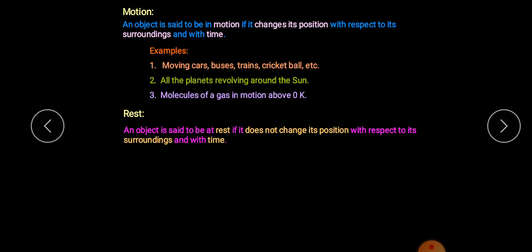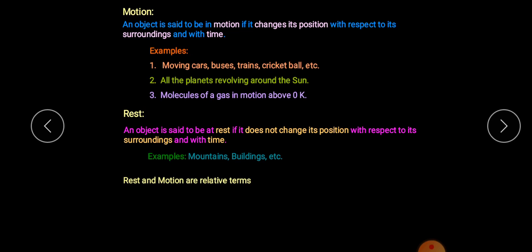Some examples of rest: mountains, buildings, trees. Then, rest and motion are relative terms — meaning they are dependent on each other. Two objects may be at rest with respect to each other but they may be moving with respect to their surroundings. Suppose you and your friend are running together — with respect to each other you are both stationary, but with respect to other persons or the road you are in motion.